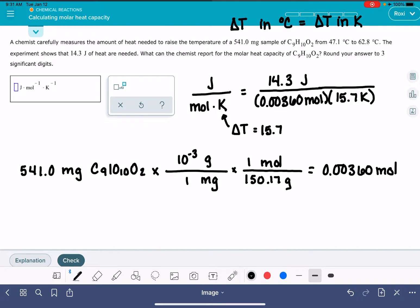14.3 divided by 0.00360 and divided by 15.7. This gives us an answer of 253 joules per mole Kelvin.